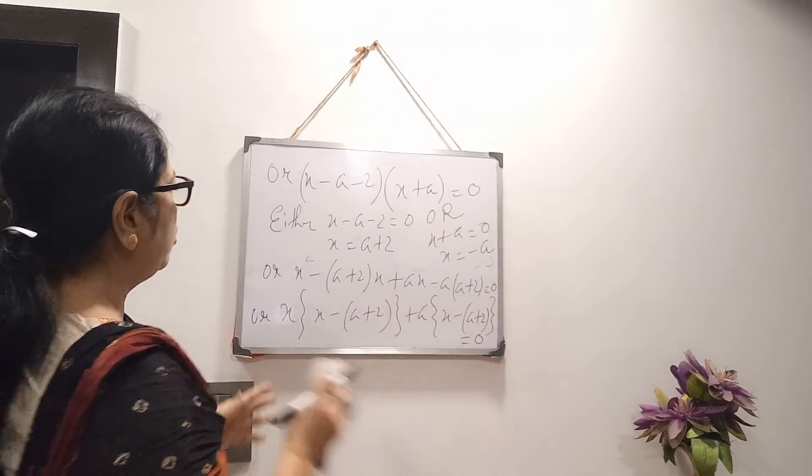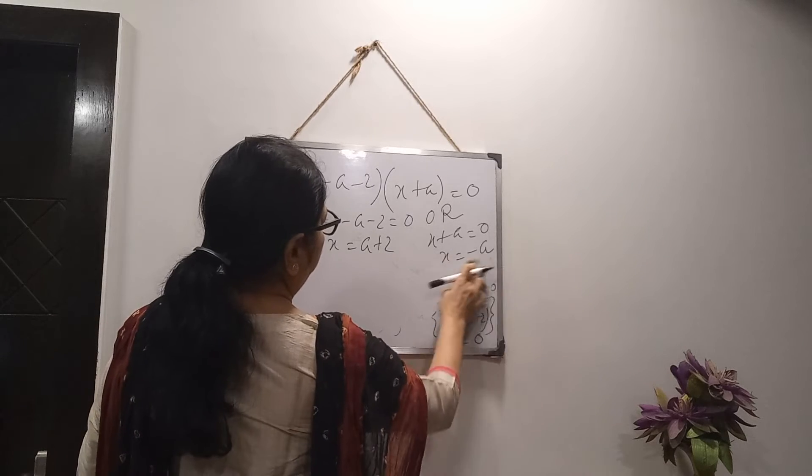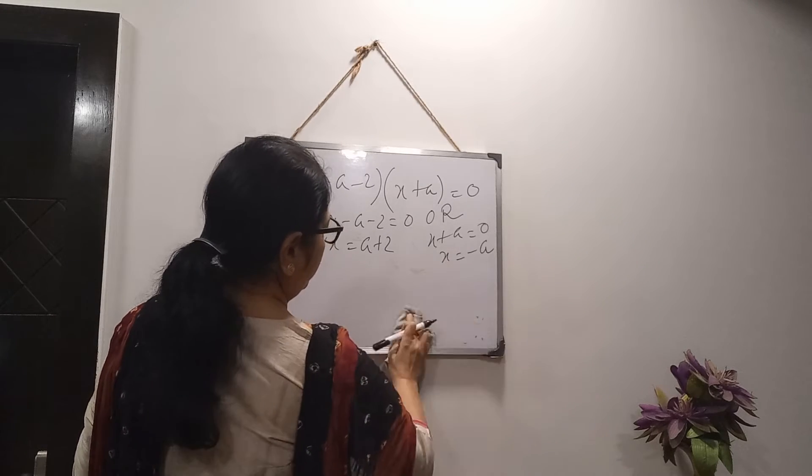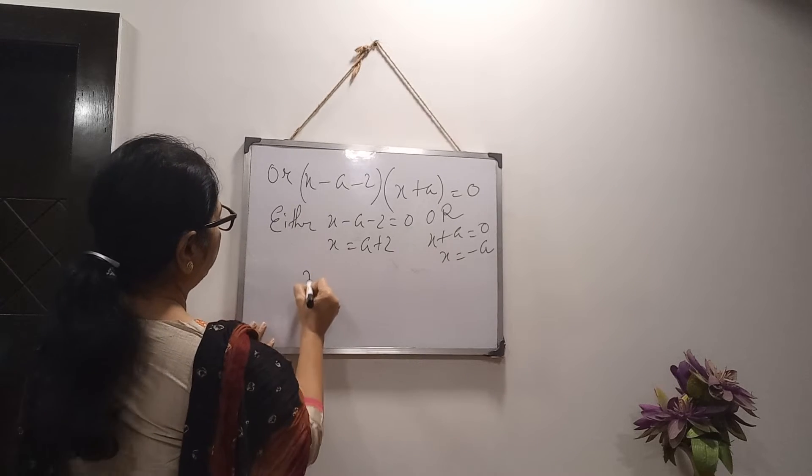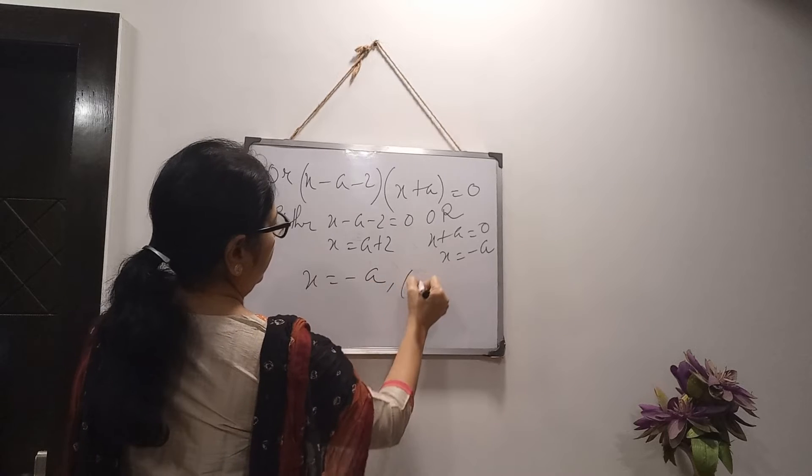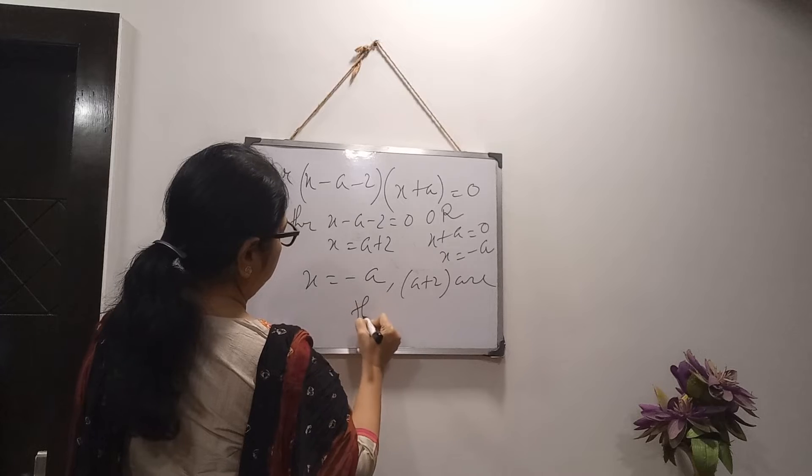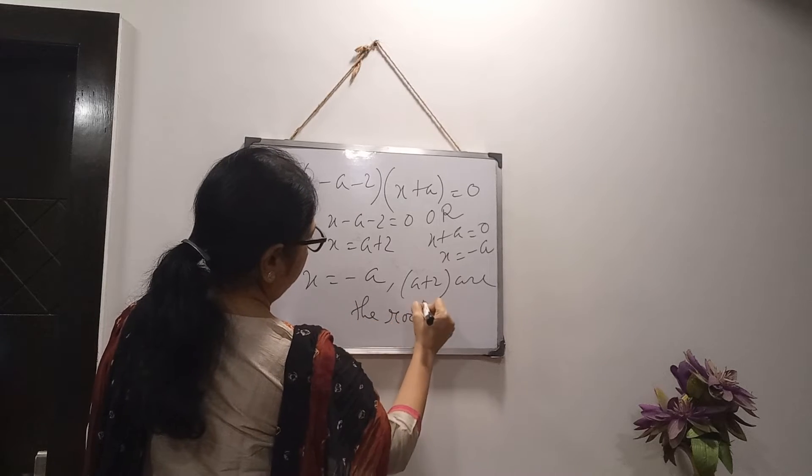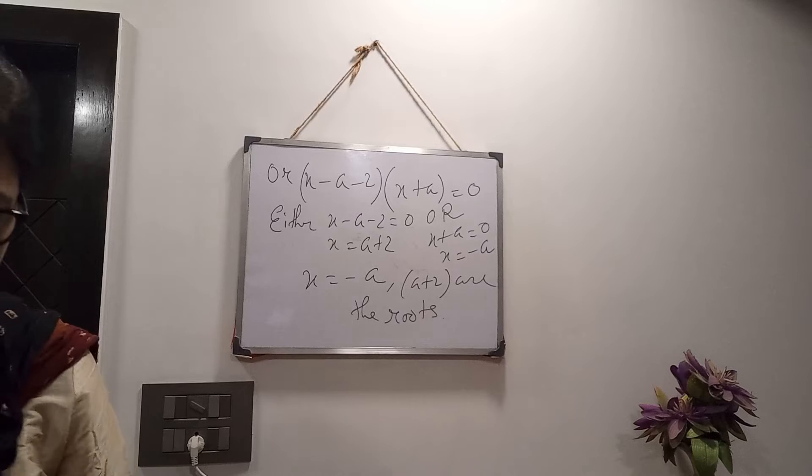So, you are getting two roots or two values of the unknown variable x. As it is a quadratic equation, so, two roots will come. And answer, you will write separately in this way. Minus a and a plus 2 are the roots. So, by middle term factor, I have solved it.